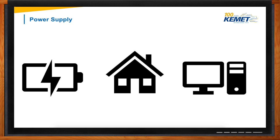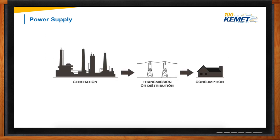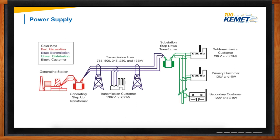To make this easier, let's talk about the electrical grid. The electrical grid is the network through which power is generated, transmitted, and distributed to consumers. The electrical grid has four different components: generating plants, transmission lines, substations, and distribution lines.